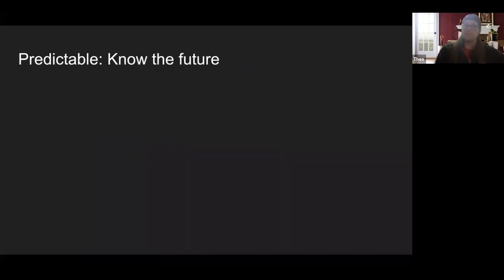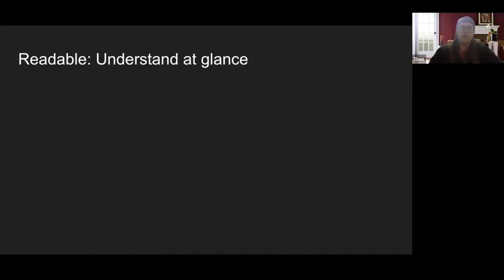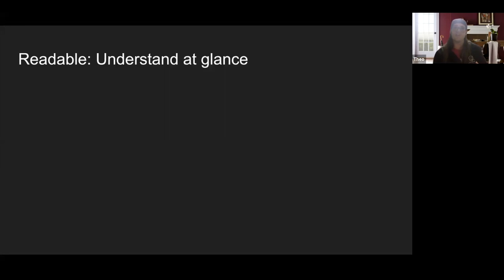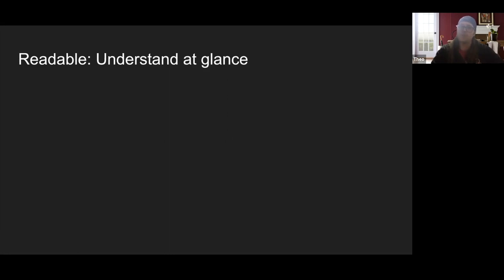So that's what predictable means — being able to know the future. The next principle of modern JavaScript is readable. Readable means understanding at a glance. The key part is at a glance, because if you've ever tried to fix bugs on a codebase you aren't familiar with, you spend a lot of time skimming through code. The more you can write code so it's easy to intuit what's happening — even if you don't know the details — the better it will be for maintainability.